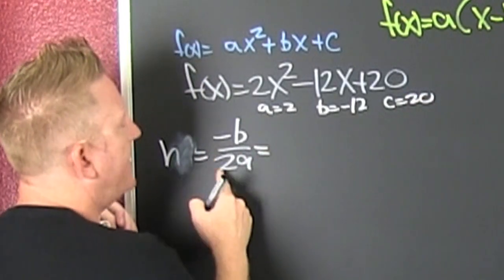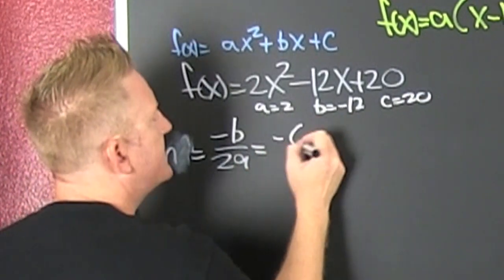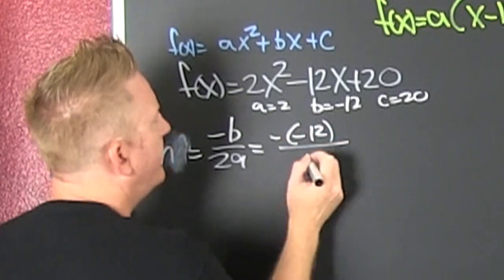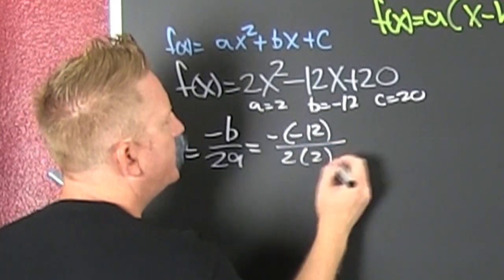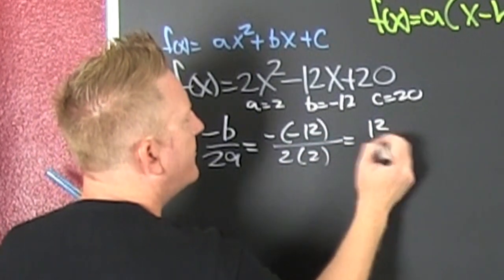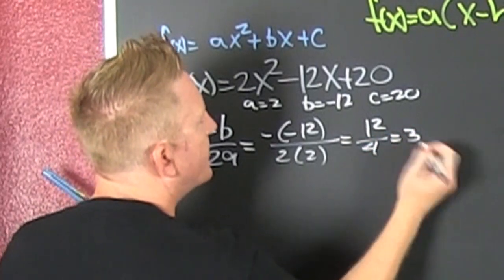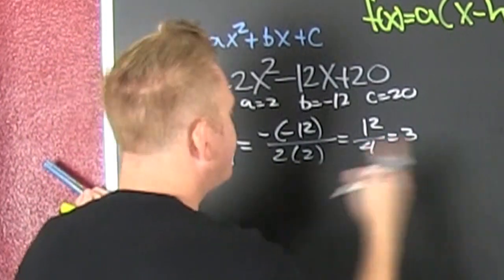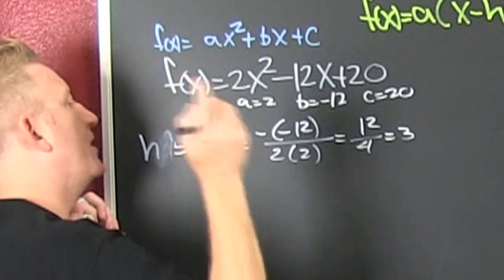So if I'm looking for minus b over 2a, that's minus a minus 12 over 2 times a deuce. And that's 12 over 4, which is a 3. So that's the x-coordinate of my vertex.